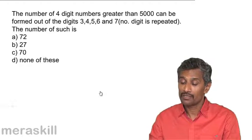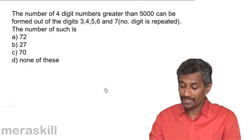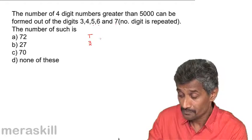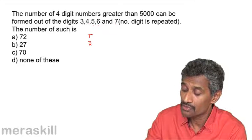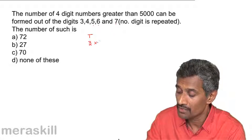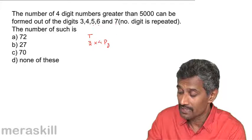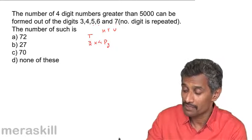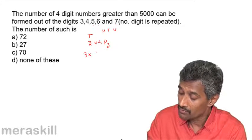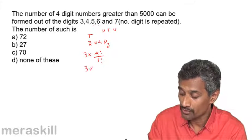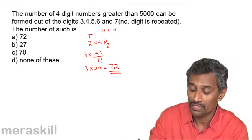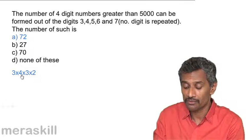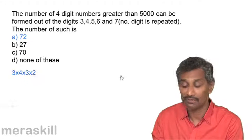For four-digit numbers greater than 5000 formed from a specific digit set without repetition: the thousands place has 3 valid choices. The remaining three digits (hundreds, tens, units) are chosen from the 4 remaining digits: 3 × ⁴P₃ = 3 × (4!/1!) = 3 × 24 = 72. So there are 72 such numbers. Alternatively: 3 × 4 × 3 × 2 = 72.